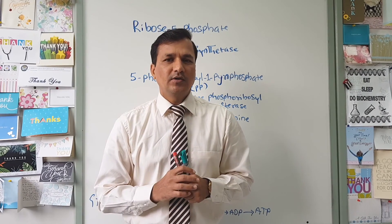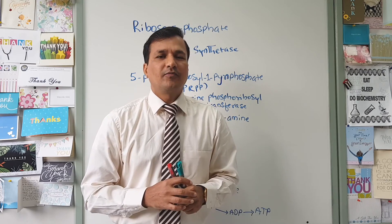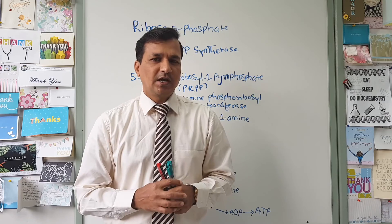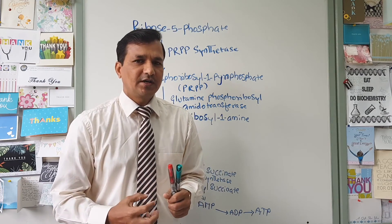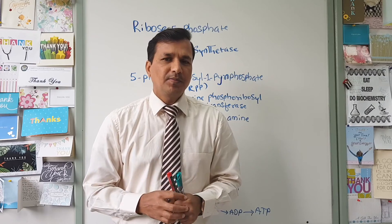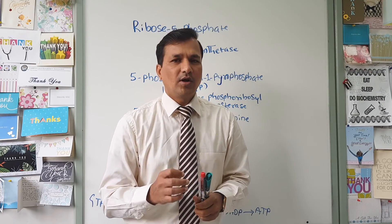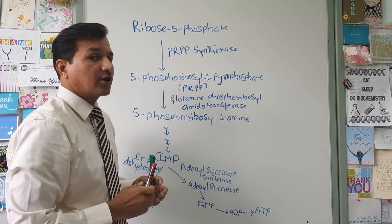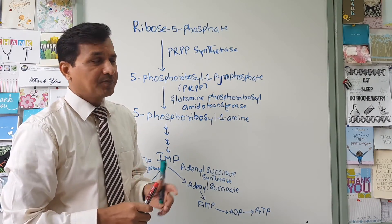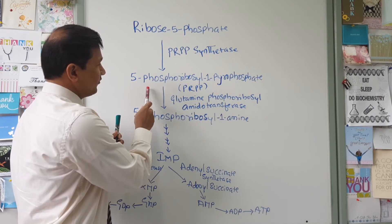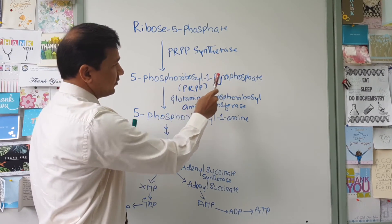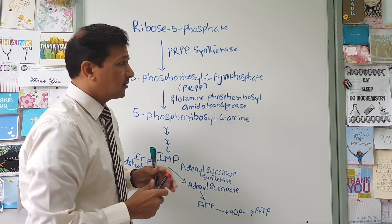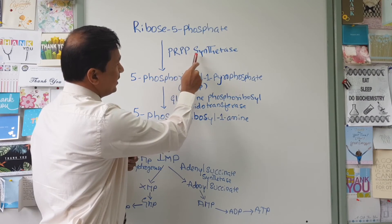The purine molecule is synthesized using phosphoribosyl pyrophosphate, abbreviated as PRPP. PRPP is synthesized from ribose-5-phosphate, which comes from the pentose phosphate pathway. Ribose-5-phosphate is converted into 5-phosphoribosyl-1-pyrophosphate (PRPP) by an enzyme called PRPP synthetase.